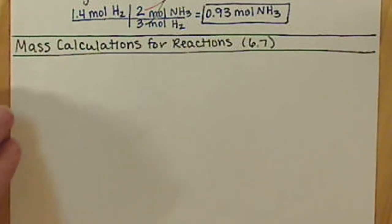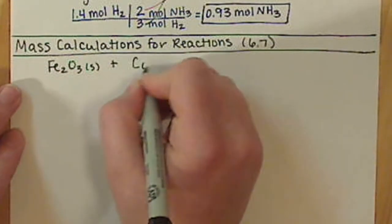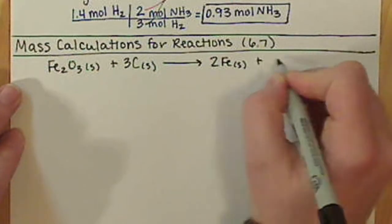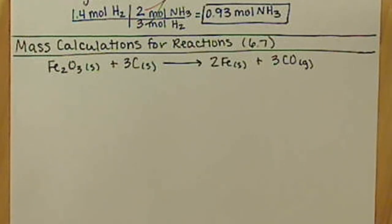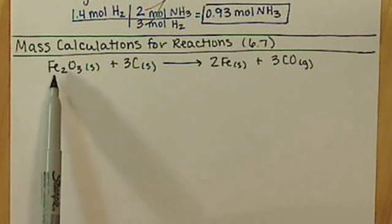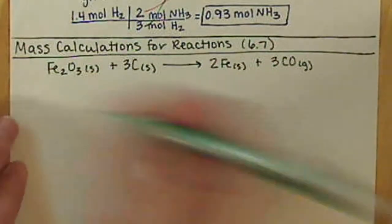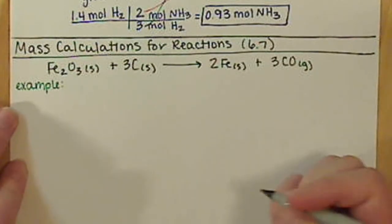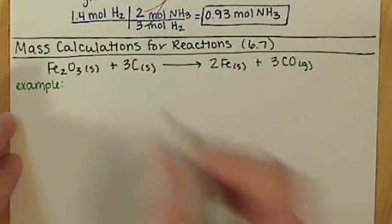Let's go ahead and work with an example here. We'll work with a single replacement reaction — we'll talk more about those later in the quarter. We are looking at Fe2O3 plus carbon forming iron and carbon monoxide, our CO. Using this balanced chemical equation, we want to know how many grams of carbon are required to react with 2.5 moles of Fe2O3.